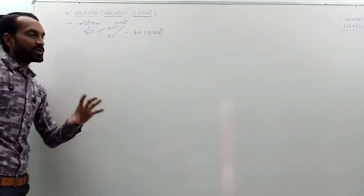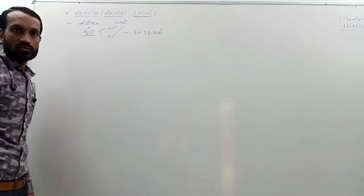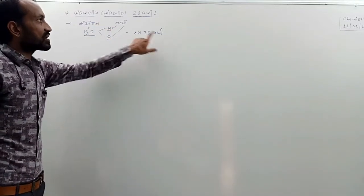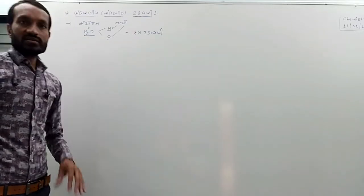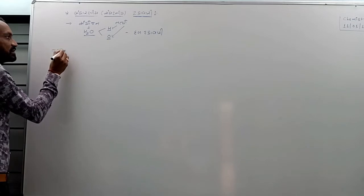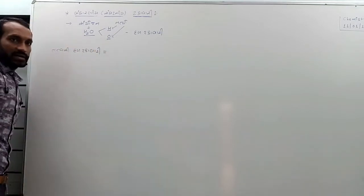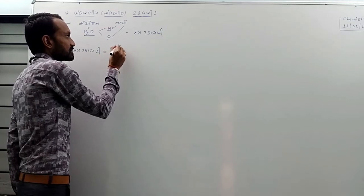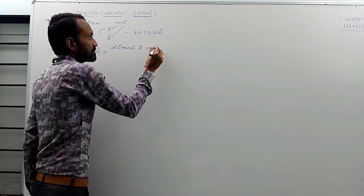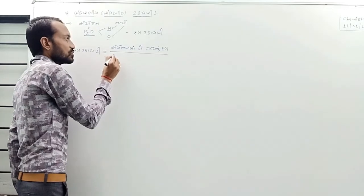આપણા ટોપિકમાં આ પોર્શન તૈયાર કરવામાં આપણે સૂત્ર લખશું, આણેયા સૂત્ર ઉપરથી ત્યામાં રહેલા તત્વો નક્કી કરશું અને દરેક તત્વાની દળ ટકા. (In our topic, we will prepare this portion: we will write the formula, identify the elements from the formula, and find the mass percentage of each element.)